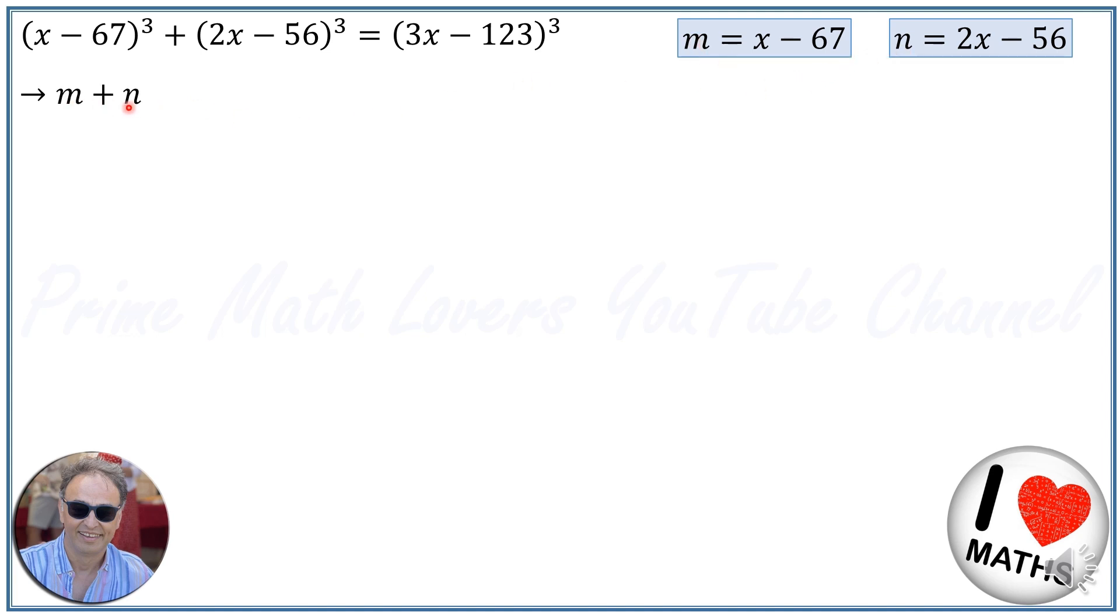m plus n will be x minus 67 plus 2x minus 56. x plus 2x will be 3x, and minus 67 minus 56 will be 123. So m plus n will be exactly this part, the right-hand side of the equation in the parentheses.